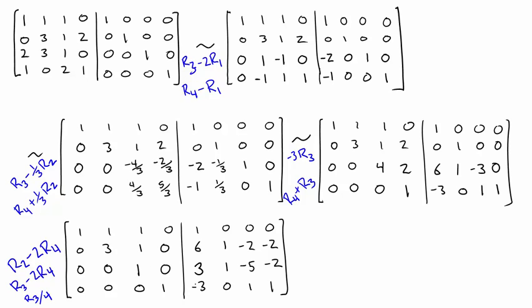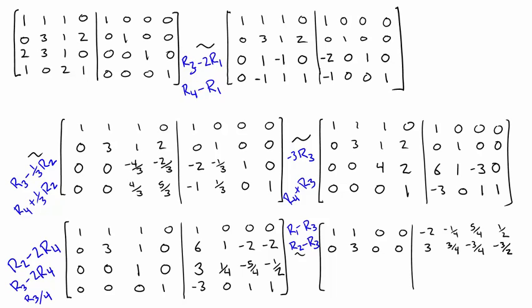And now, let's divide the third row by 4 to get a pivot of 1. And now our job is to put zeros in the third column above the 1. So we will subtract R3 from both R1 and R2, and we can do that in the same step. Rows 3 and 4 stay the same.